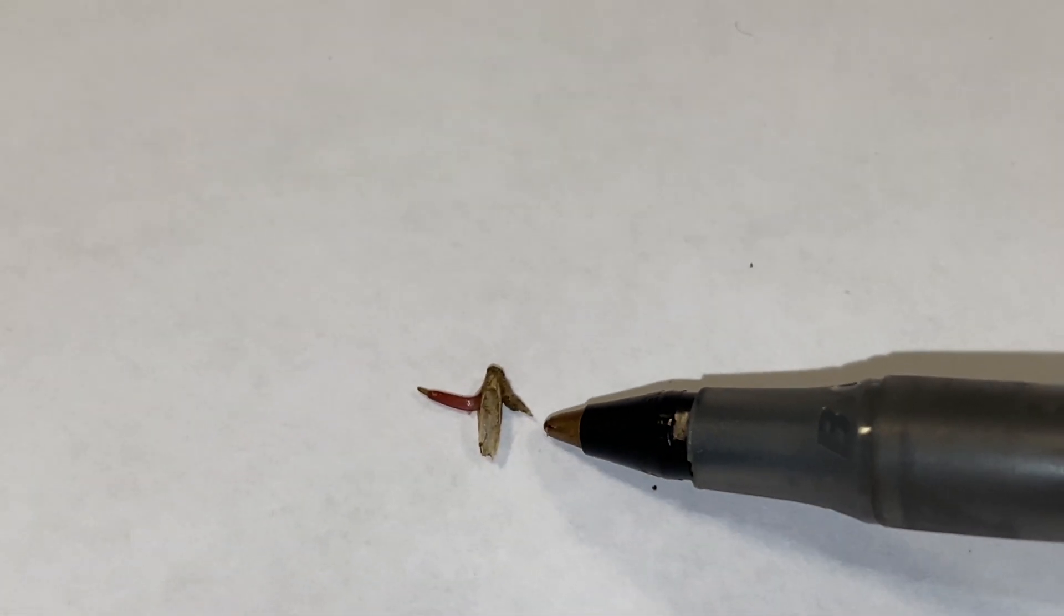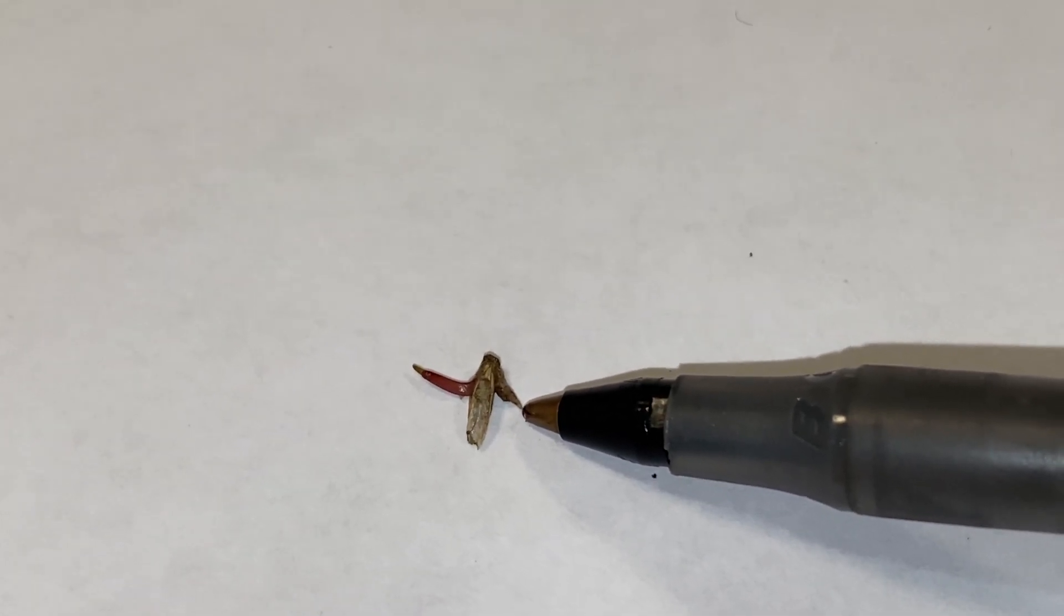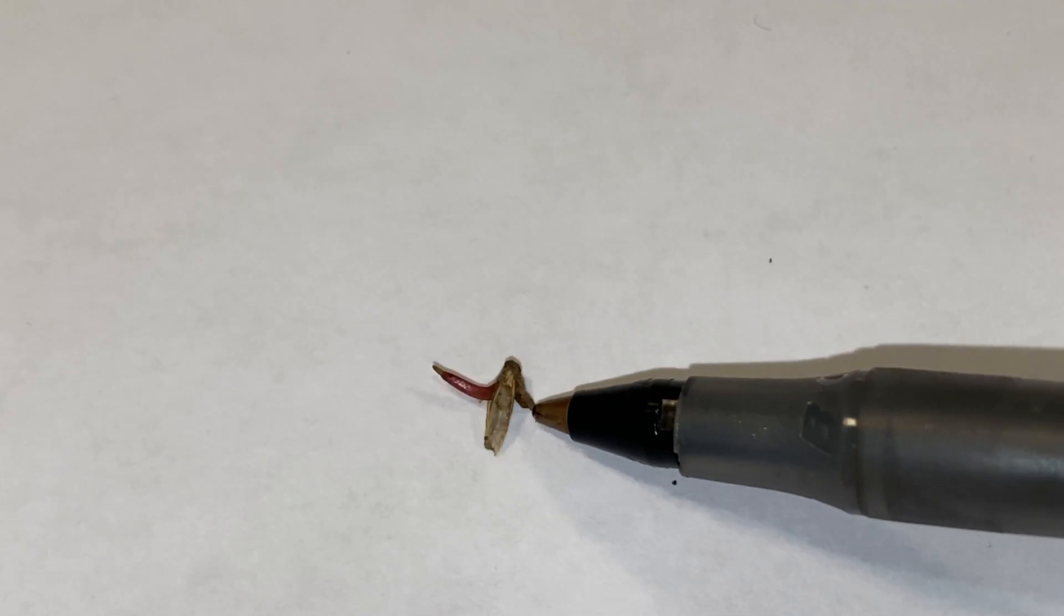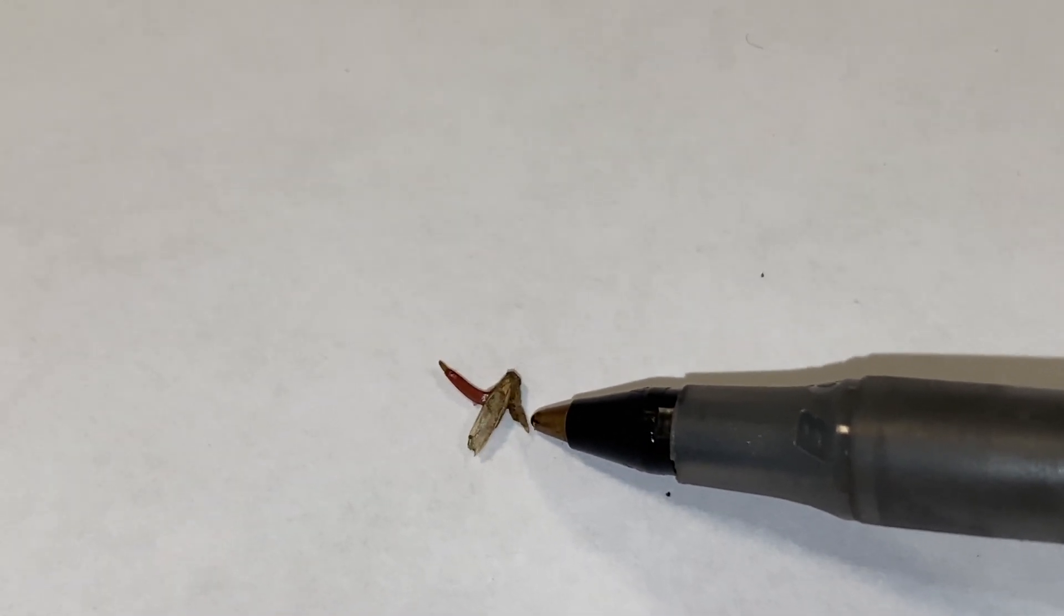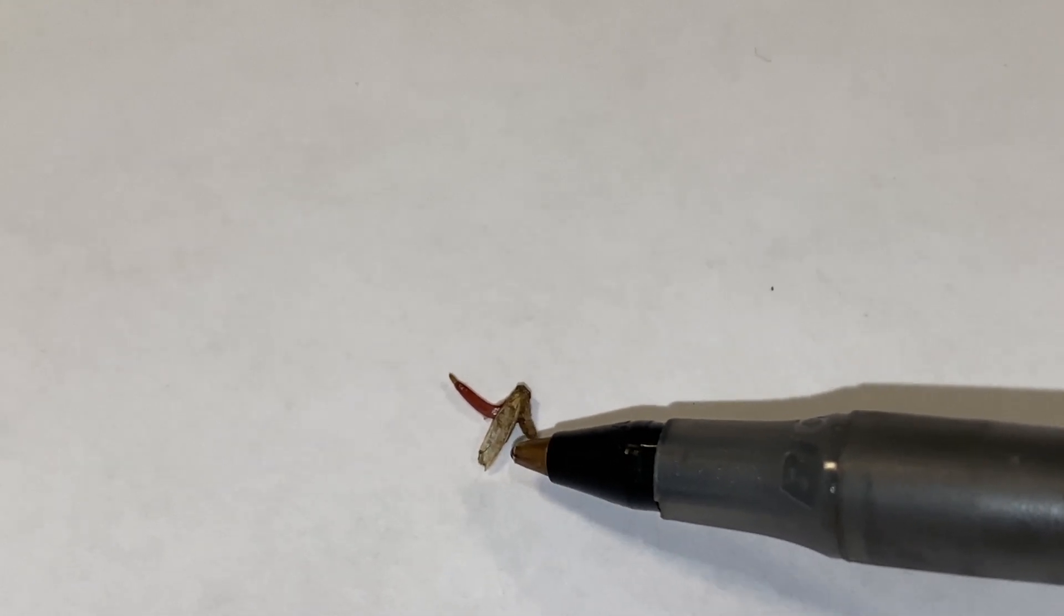So with a pre-emergent what it does is it puts a barrier on the soil. And so when this first root reaches down and touches the soil it prunes the root off. Chemically it prunes this root.